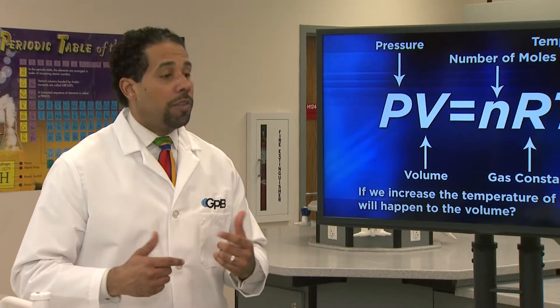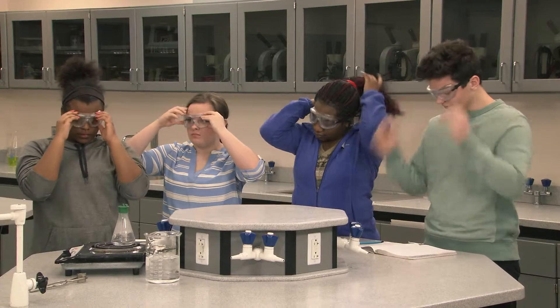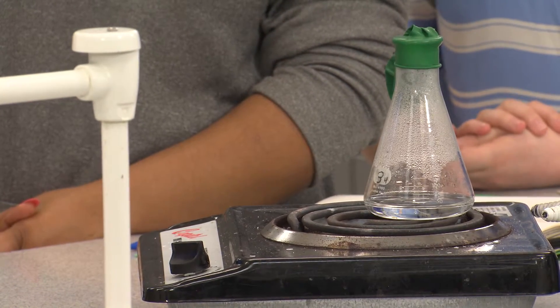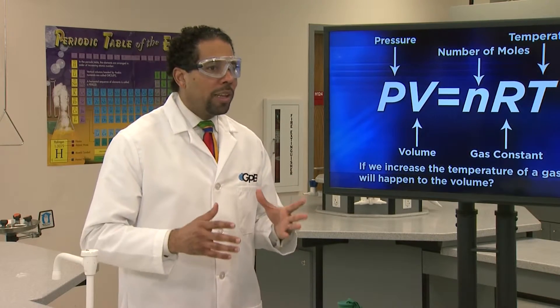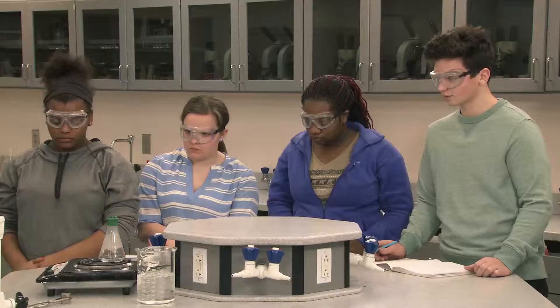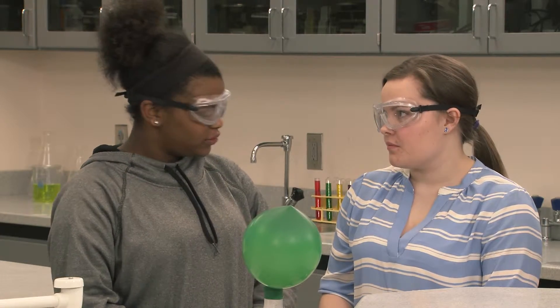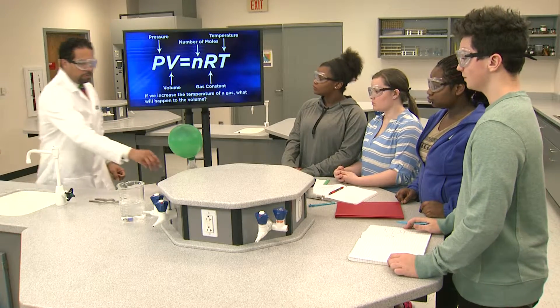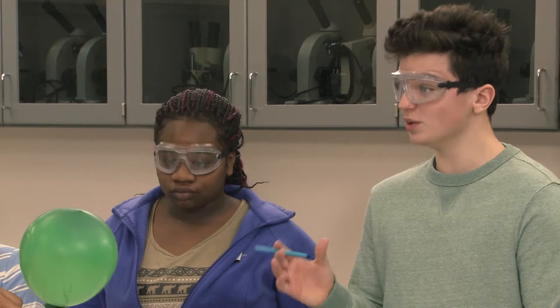This demonstration will explore the relationship between temperature and volume of a gas. Everyone, put on your safety goggles. I have in front of me an Erlenmeyer flask containing about 25 milliliters of water on a hot plate with a balloon over the opening. We'll heat the flask of water to boiling and see what happens to the balloon. The balloon is inflating. Why is it doing that? It has to be the water vapor. When the temperature goes up, the volume definitely increases.